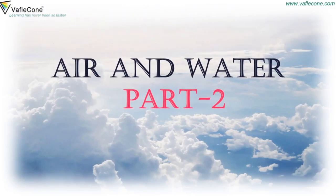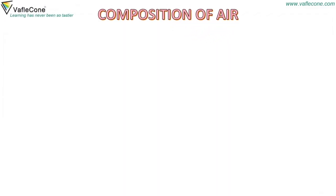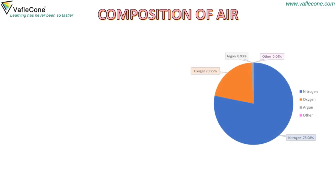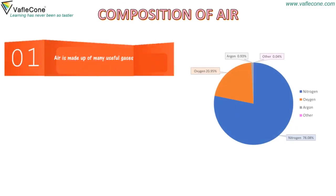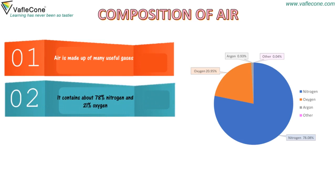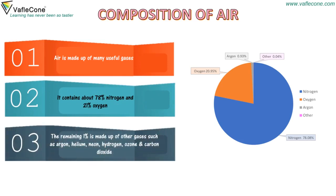Air and Water Part 2: Composition of Air. Air is made up of many useful gases. It contains about 78% nitrogen and 21% oxygen. The remaining 1% is made up of other gases such as argon, helium, neon, hydrogen, ozone, and carbon dioxide.